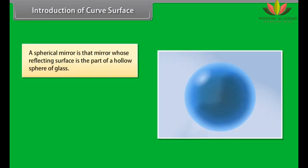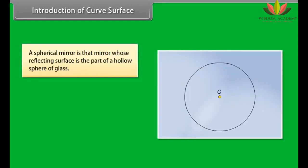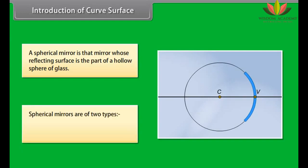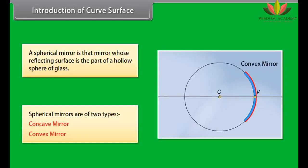A spherical mirror is a mirror whose reflecting surface is part of a hollow sphere of glass. Spherical mirrors are of two types: concave mirror and convex mirror.